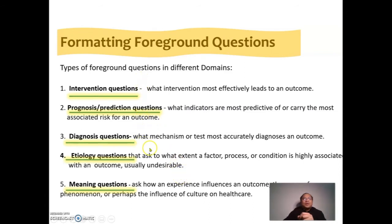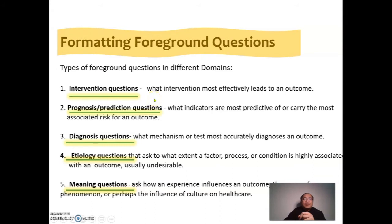When you create a PICO question, you should be able to identify its type. If it is intervention, we talk about treatment or therapy. If it is prognosis, we talk about the outcome of the intervention. If the PICO question focuses on tests being compared, it is diagnosis. If it concerns causation or reason, it is etiology. A meaning question is about experience. In PICOT, there are two T's — one is the type of question we are currently discussing, and the other is the type of evidence we will need.